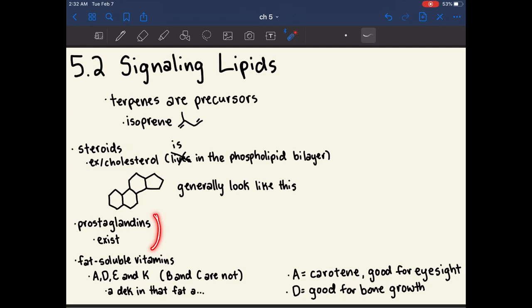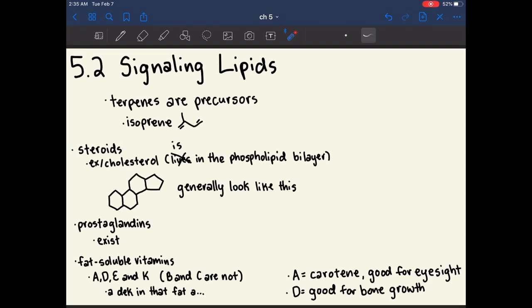Prostaglandins are also signaling lipids. People thought they were made by the prostate gland, and it turns out they're not. They're just a regular signaling lipid. I do think it's important to memorize which vitamins are fat-soluble and which ones are not.